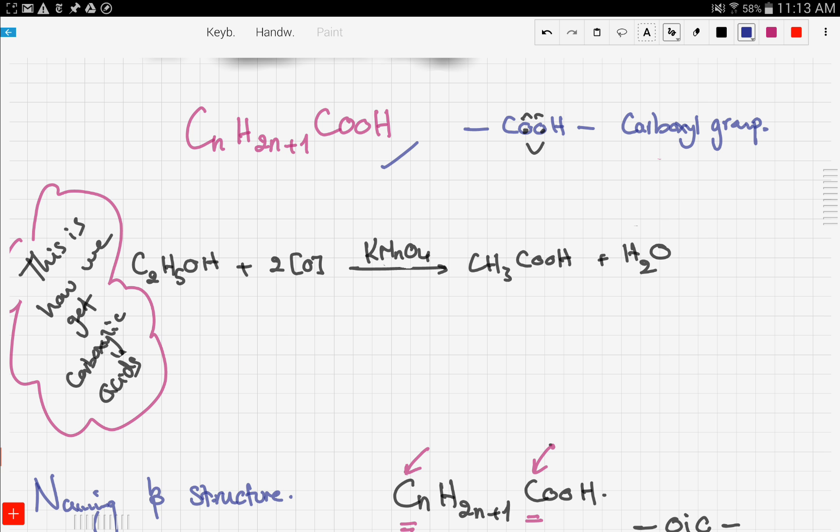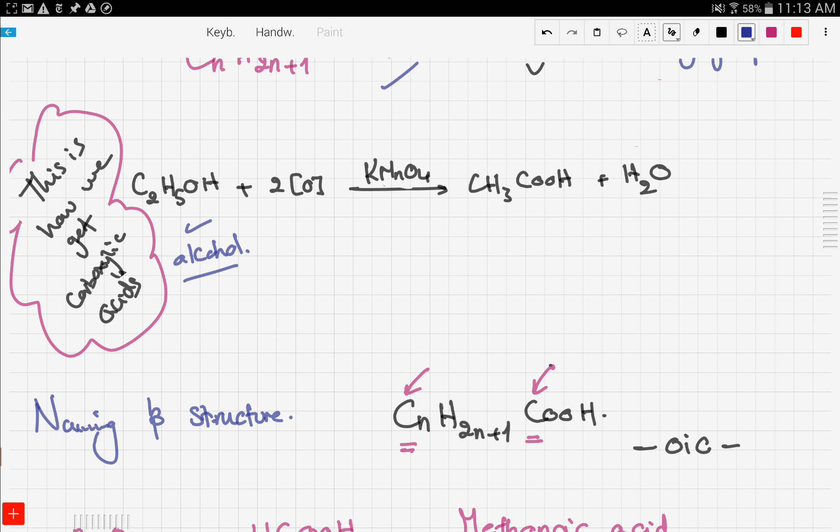We said they're famous for their carboxyl group, which is COOH. We said if we want to get a carboxylic acid, what we do is we oxidize some alcohol.